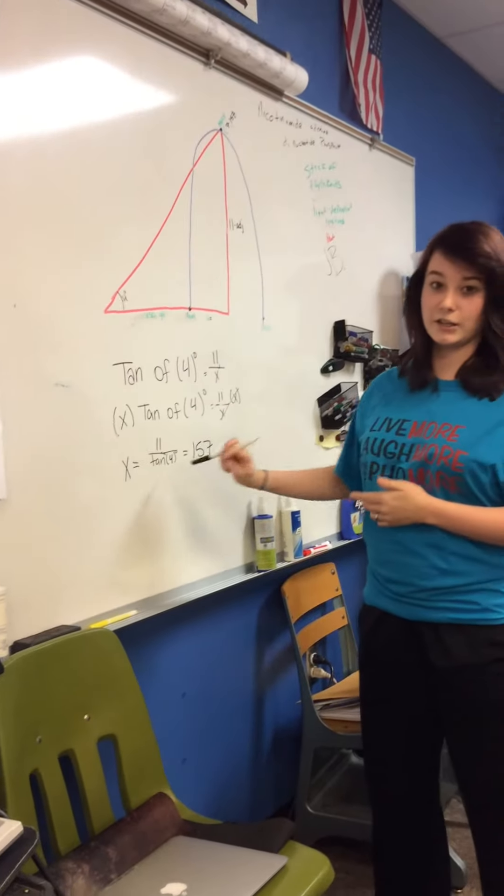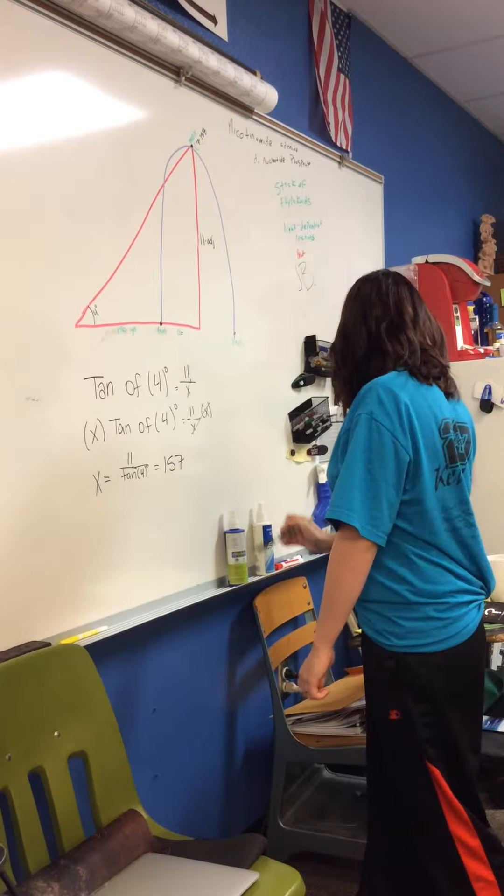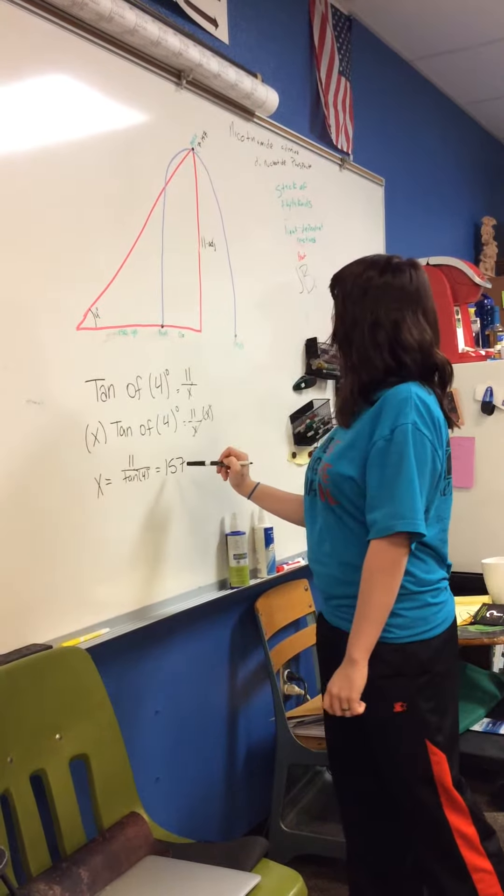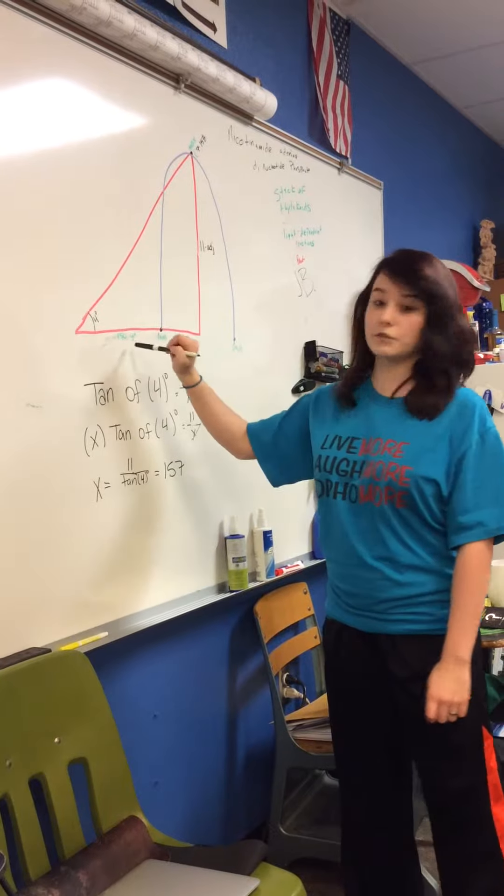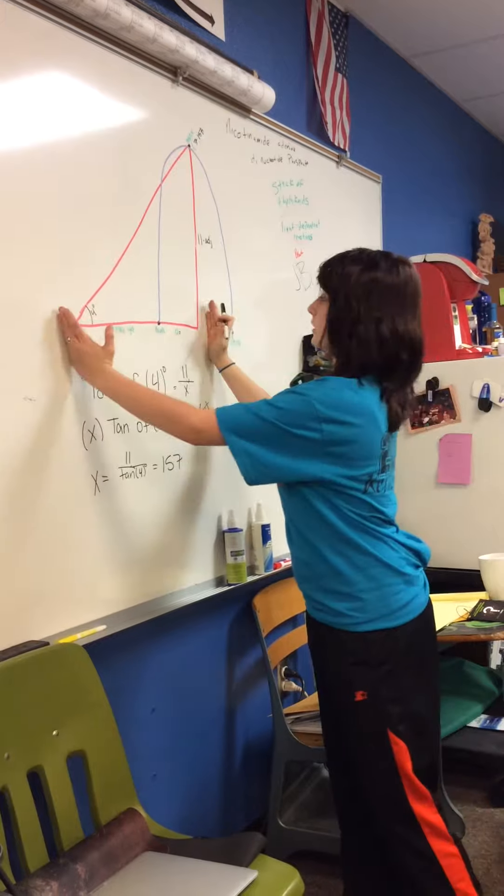You can use a calculator because I can't do it in my head. And then you're going to do 157 times 150, which will give you your A, which is the rest of the distance for your whole thing.